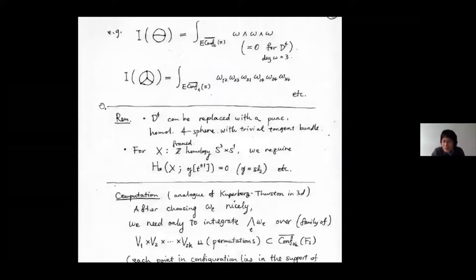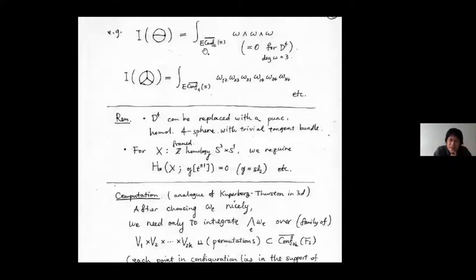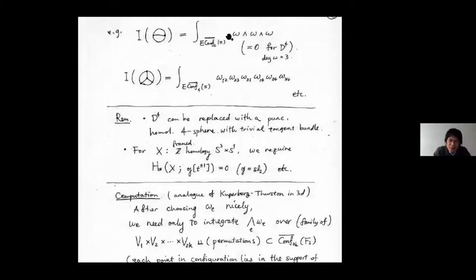Question: Can you do a dimension count showing where the dimension of the configuration space is coming from? It seems it needs to be nine-dimensional. Answer: The two-point configuration space is eight-dimensional, and the base space is one-dimensional, so this is nine-dimensional, and the integrand is a nine-form. Correct.